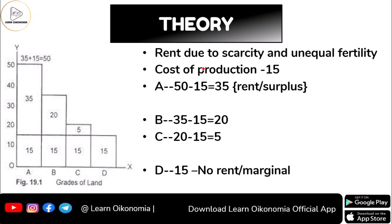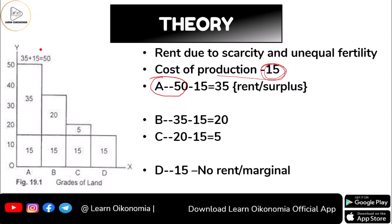Initially, Grade A was producing 50 units. Rent arises as a result of scarcity of land and also as a result of unequal fertility. The cost of production is assumed to be the same for all land, equal to 15. In the figure, output is shown along the y-axis and grade of land along the x-axis. Grade A land's output is represented by the first rectangle.